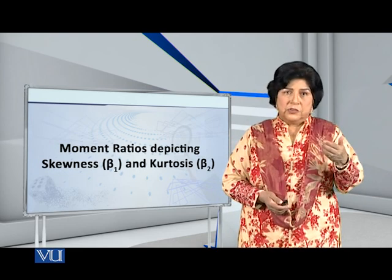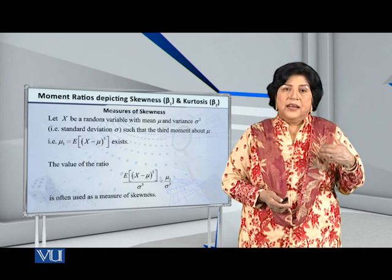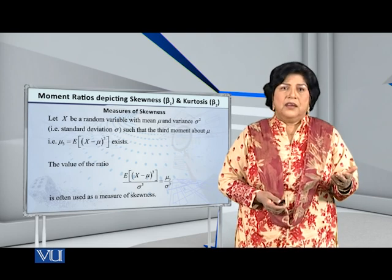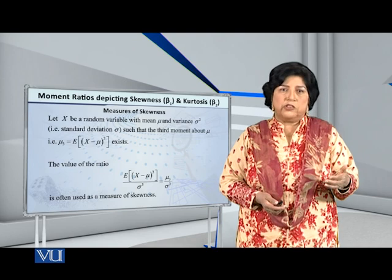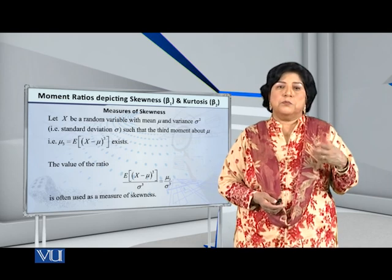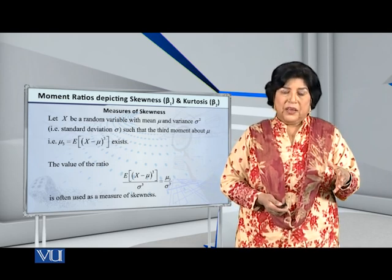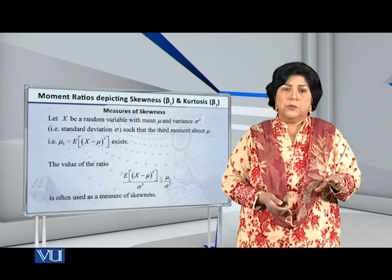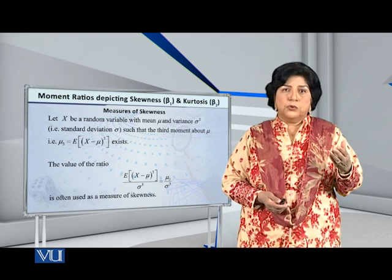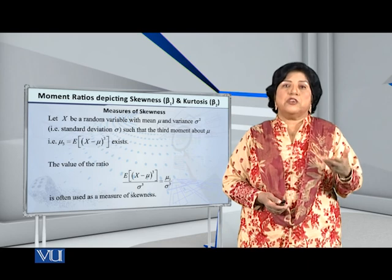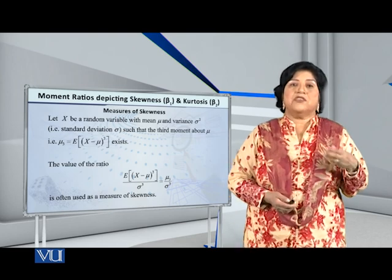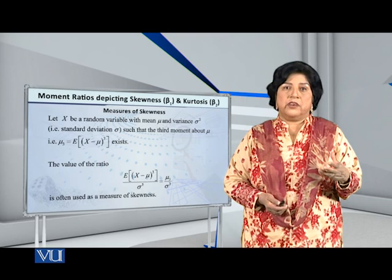Let me present it to you in a formal manner. Let X be a random variable with mean mu and variance sigma square, which obviously means that the standard deviation is sigma, such that the third moment about mu exists. Then the value of the ratio mu 3 over sigma cubed is often used as a measure of skewness.